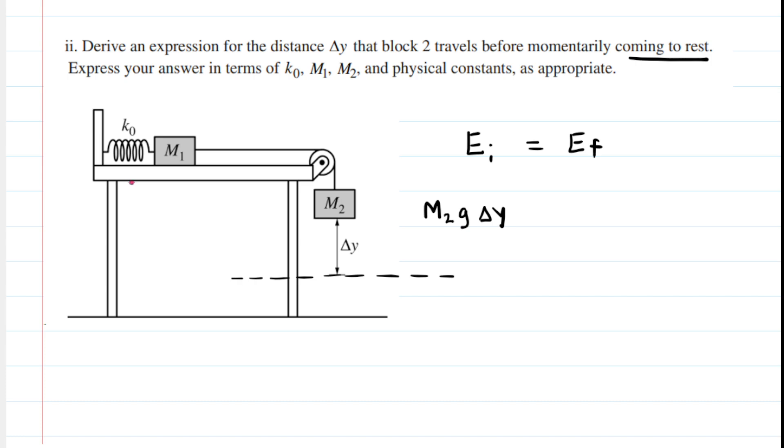Now, some of you might notice that M1 is also located a certain distance above that reference line. So it, too, should have gravitational potential energy, and indeed it does. But notice that as the system begins moving, Block M1 is going to slide horizontally to the right, and when it comes to rest, it's going to still be at that same height. So that means that its gravitational potential energy doesn't change.